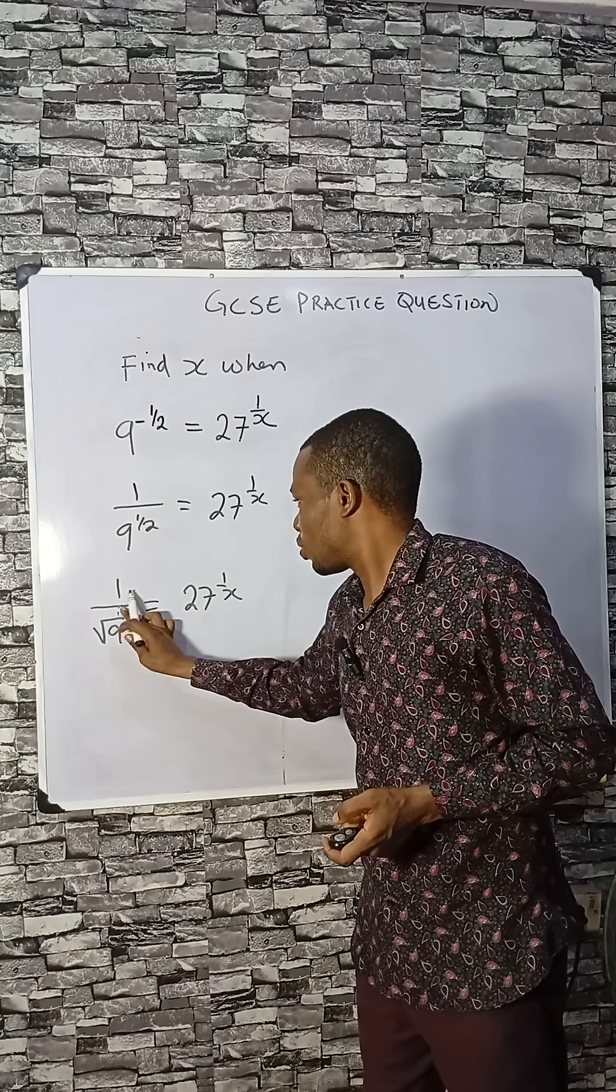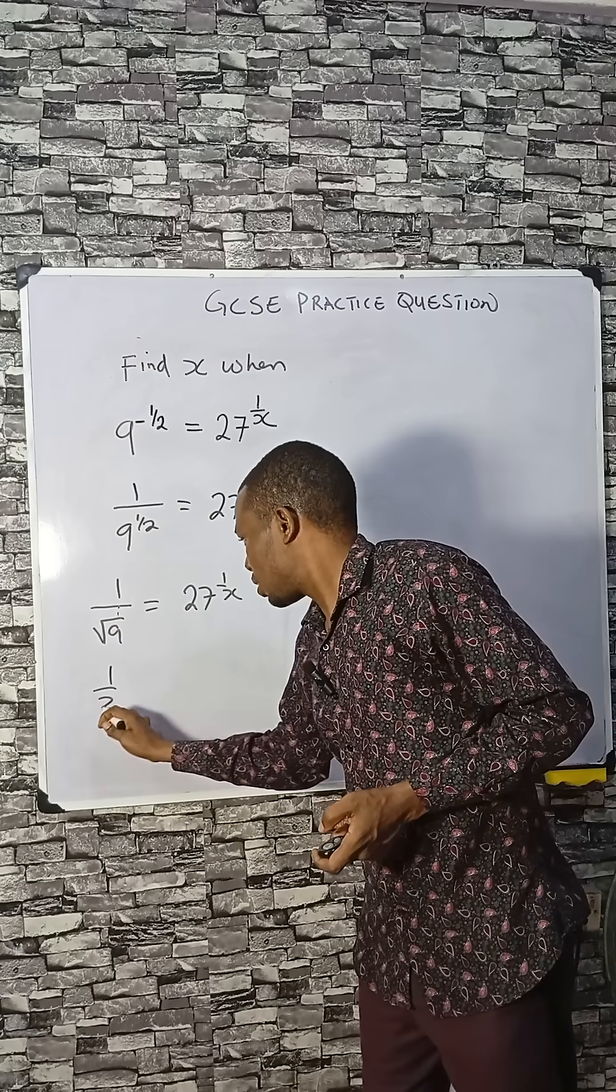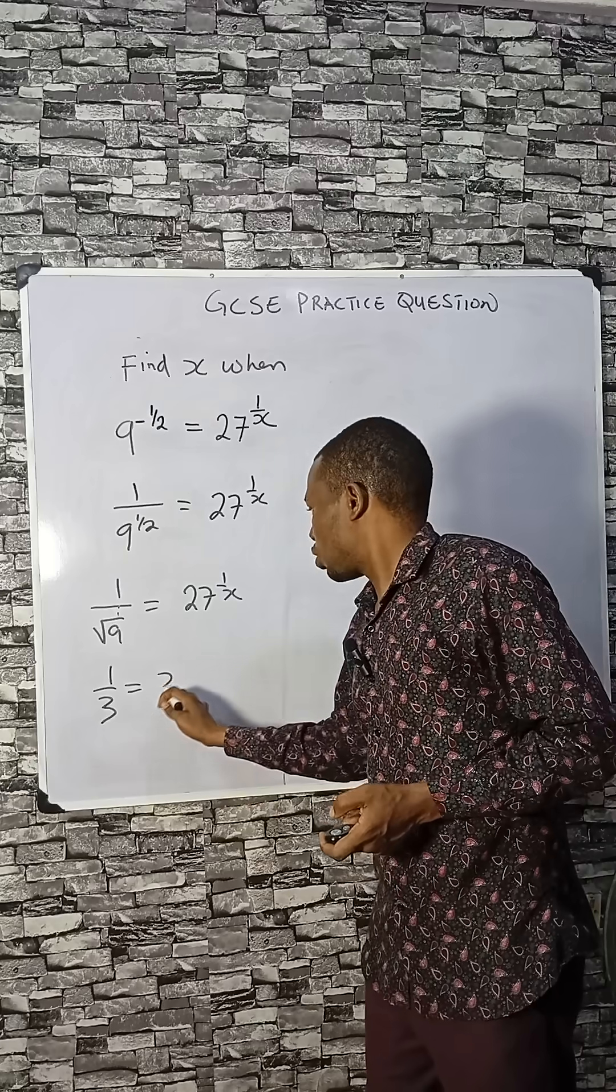So square root of 9 here is 3, and 27 is 3 cubed.